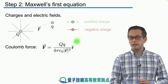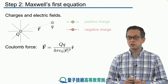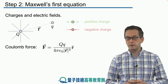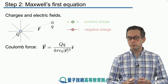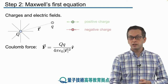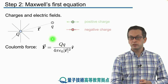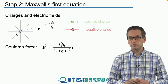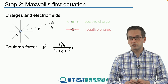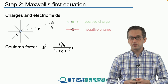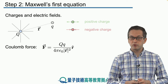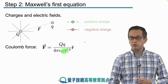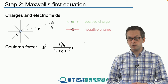R-hat represents the direction in which the force is pointing. If the two charges have the same sign — both positive or both negative — then this product will be positive, meaning the force points away from capital Q. If they are opposite in sign, one positive and one negative, then the force is negative, so it points towards capital Q.